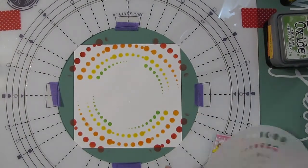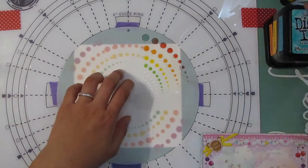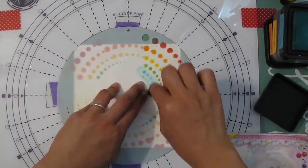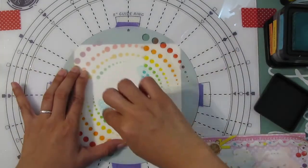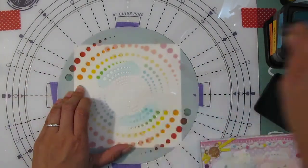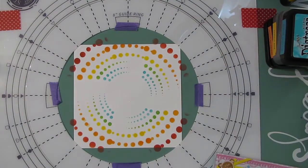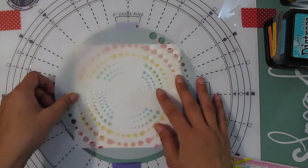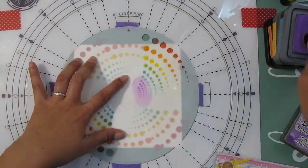The next color I went for is Peacock Feathers, and this is a Distress Ink. Here you can see instead of just doing one row of the dotted circles, I went ahead and applied it to two of the lines. Lastly I used Wilted Violet in Distress Oxide ink.